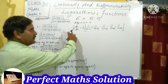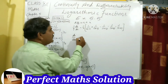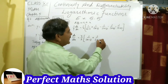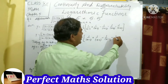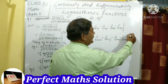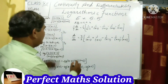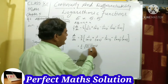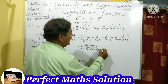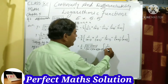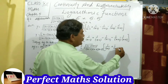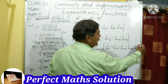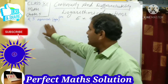Transferring y to the right-hand side: dy/dx equals (y/2)·[1/(x−1) + 1/(x−2) − 1/(x−3) − 1/(x−4) − 1/(x−5)]. Substituting the value of y: dy/dx equals (1/2)·√[(x−1)(x−2)/((x−3)(x−4)(x−5))]·[1/(x−1) + 1/(x−2) − 1/(x−3) − 1/(x−4) − 1/(x−5)]. This is the answer.